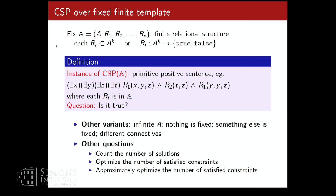A typical instance has variables X, Y, Z constrained to be in relation R1, T and Z in R2, and Y, Y, Z in R1. We want to satisfy all constraints — that is, find out that this existentially quantified formula is true. This can also be formulated as a homomorphism problem to a fixed structure, or as queries to a fixed relational database.